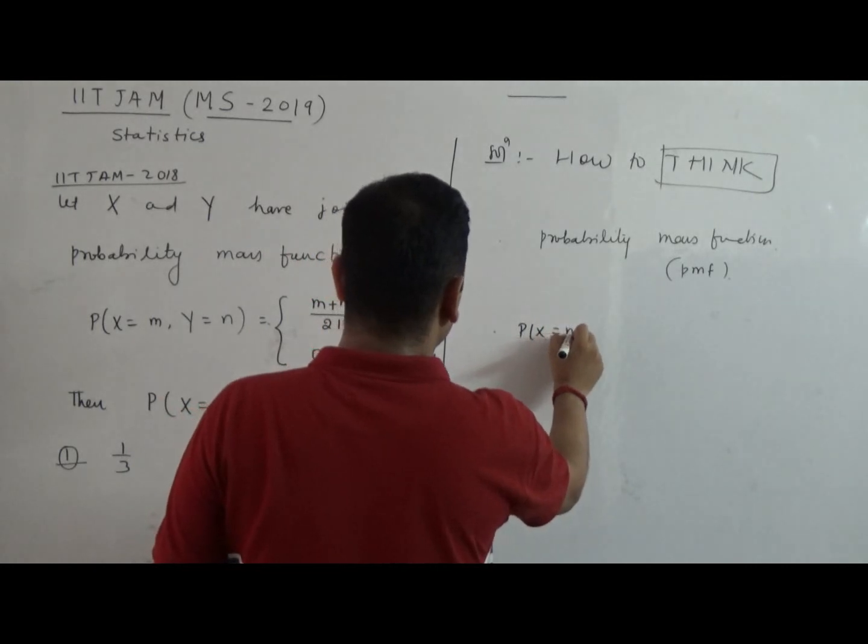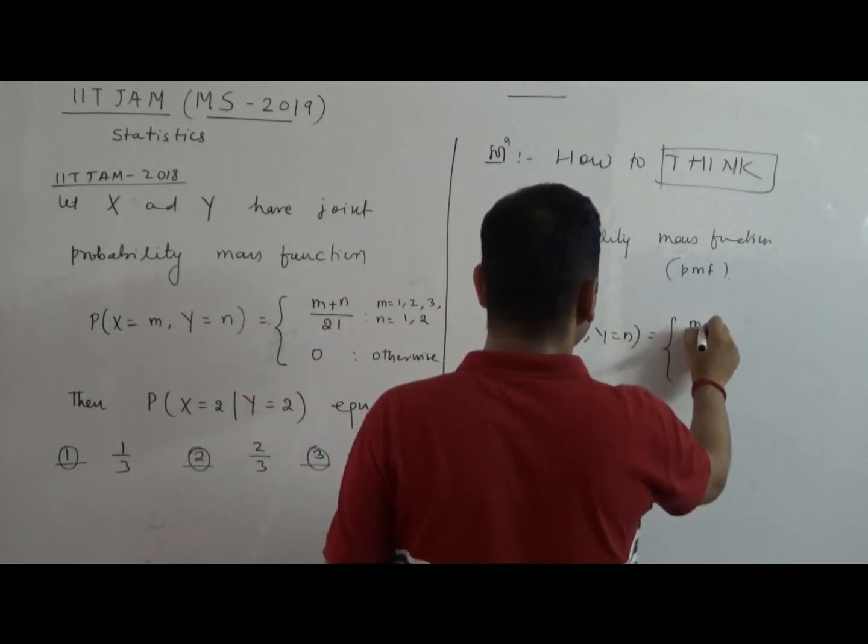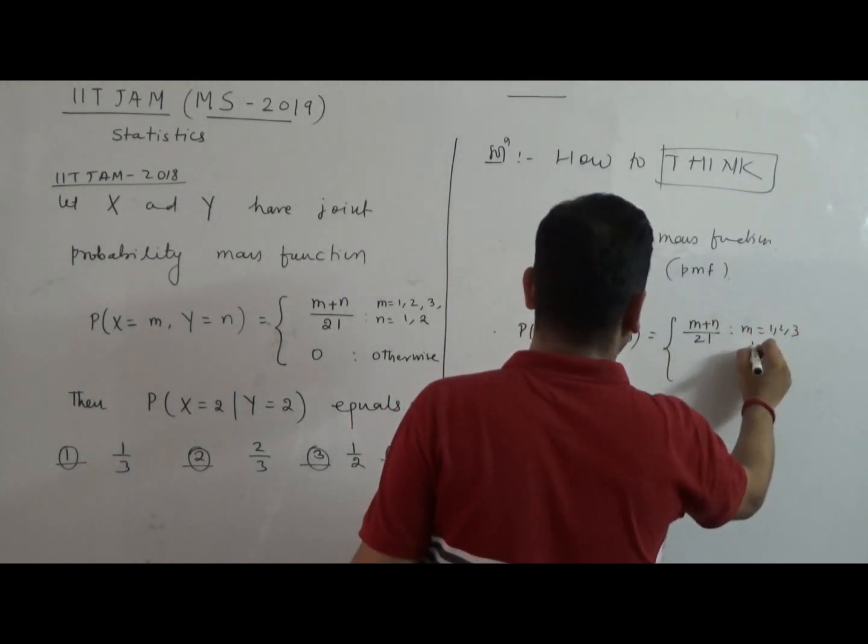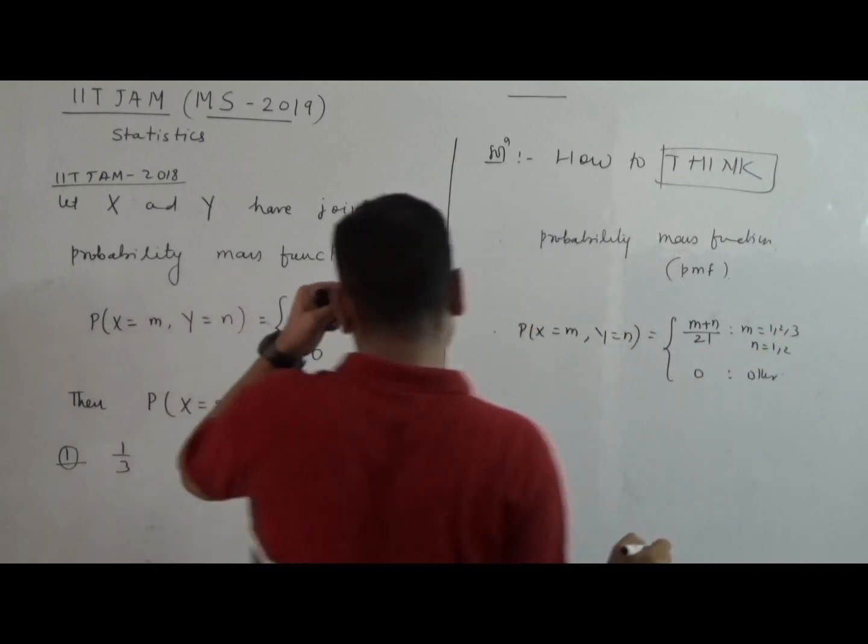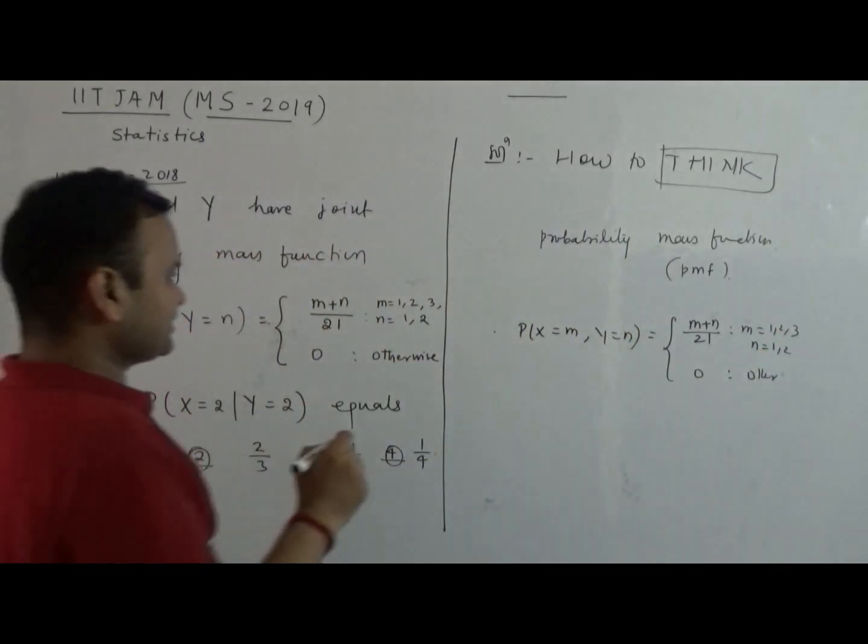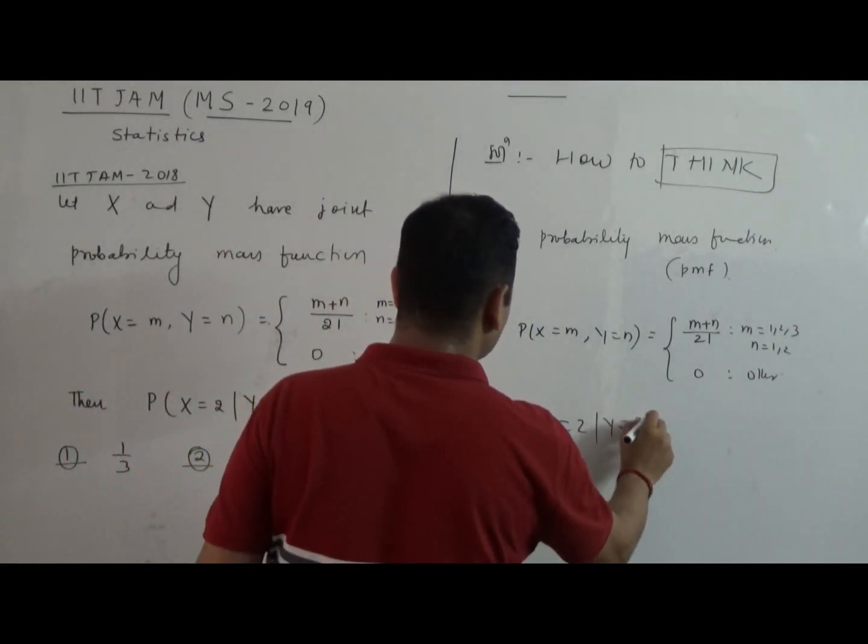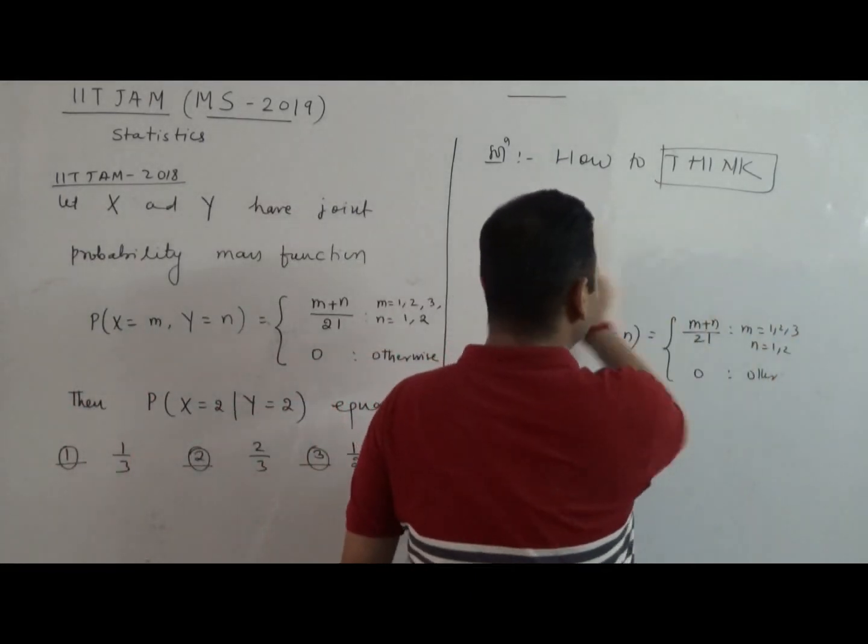Because if I explain the definition, it will become too lengthy. So this is what they have defined: probability of X equal to M and Y equal to N is M plus N by 21, when M is 1, 2, 3 and N is 1, 2, 3, and 0 otherwise. With the help of this, they are asking probability of X equal to 2 given Y equal to 2. So let's recall some basic facts.